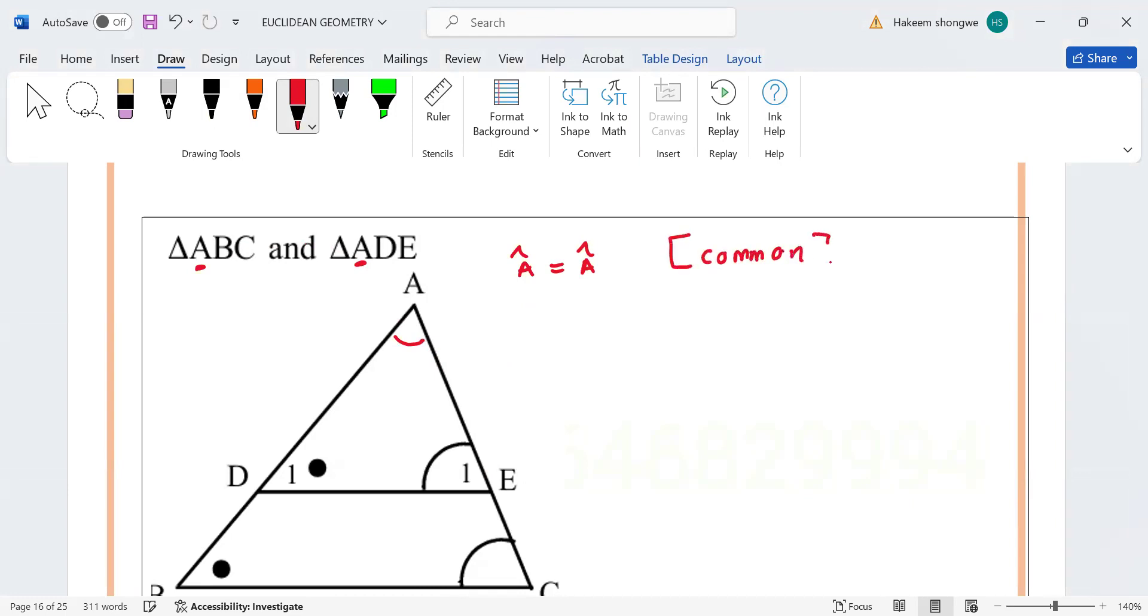Then check angle D1 and angle B. So angle D1 and angle B, they are equal. In order to check something, in triangle ABC you have B... so meaning that angle D1 equals angle B.